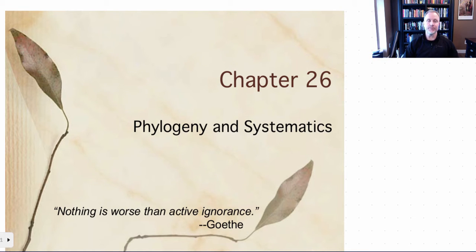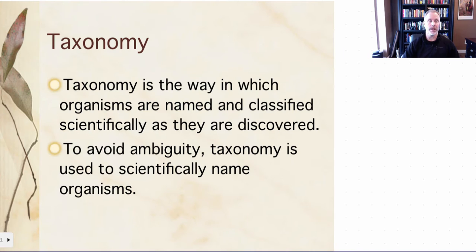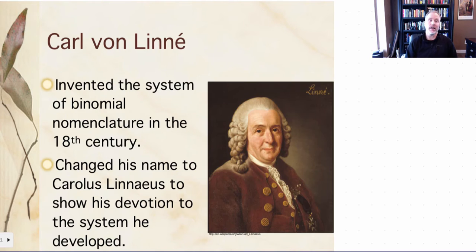So chapter 26, this portion deals with classification. We'll talk about phylogeny and cladistics in another section. The essential idea here is that species are named and classified using an internationally agreed-upon system to make sure everybody's referring to the same things. Taxonomy is the way in which organisms are named and classified scientifically once they're discovered, and it avoids ambiguity by ensuring everybody is talking about the same organism.